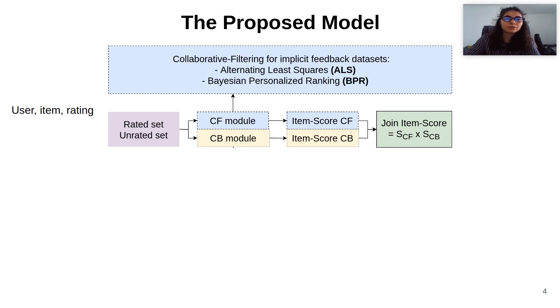The model consists of a collaborative filtering module and a content-based module. In the collaborative filtering, we tested two state-of-the-art algorithms: alternating least squares and Bayesian personalized ranking approach, both methods suitable for datasets of implicit feedback.